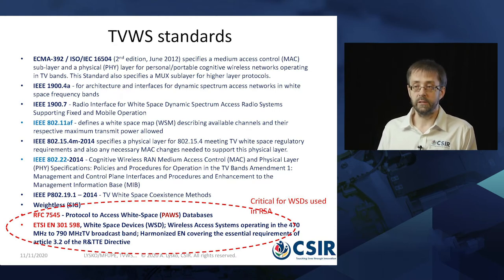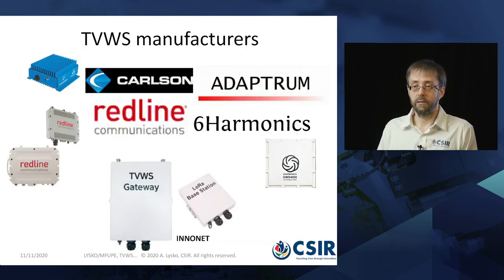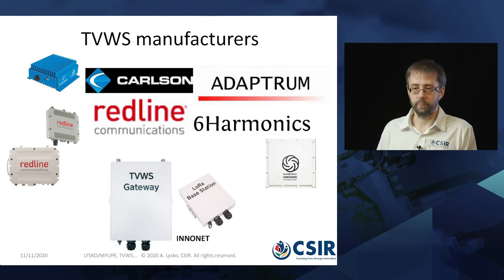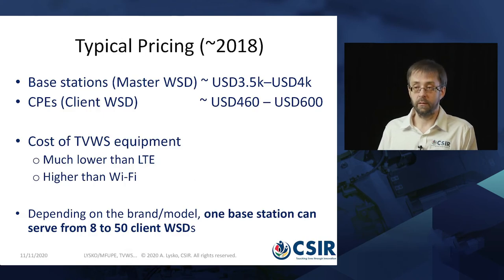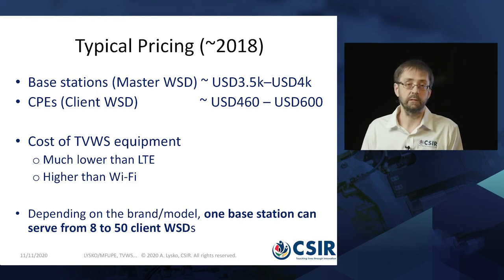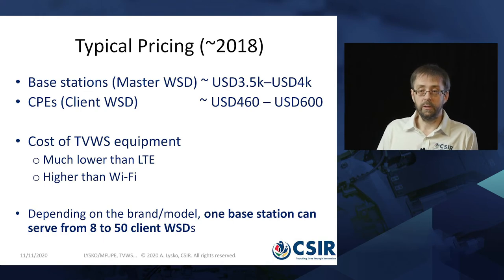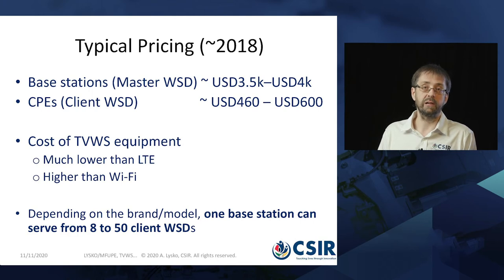TV white space has a fairly complete ecosystem, including many standards. For Africa, two highlighted standards are the most important. There is also a host of TV white space manufacturers — here I showed the ones whose devices we had the opportunity to work with. Typical pricing: base stations are around $4,000 USD and client devices around $500 USD. The cost of TV white space equipment is much lower than LTE but a bit higher than Wi-Fi. One base station can serve 8 to 50 client devices and cover large areas, making it a viable technology for many applications.